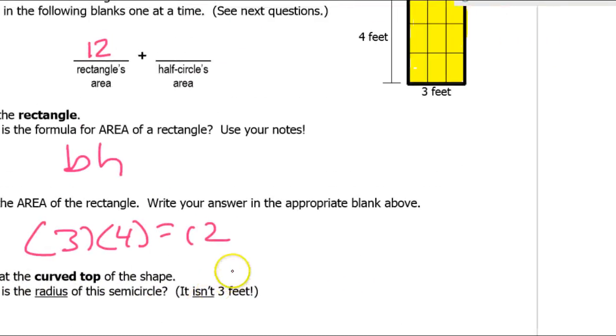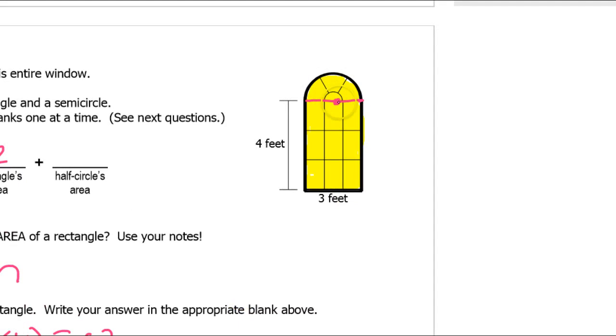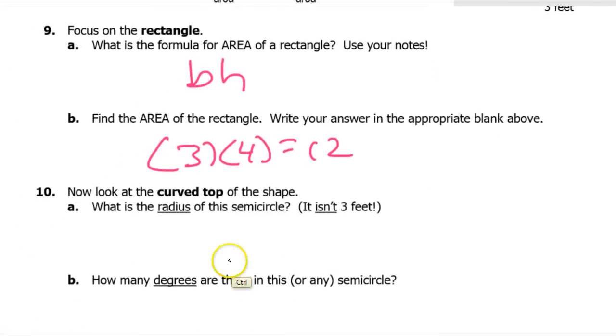Now the curve part. What's the radius of this semicircle? One point five. Yeah, that's that one point five we spoke of earlier. The radius is equal to one point five. The radius is one point five feet.